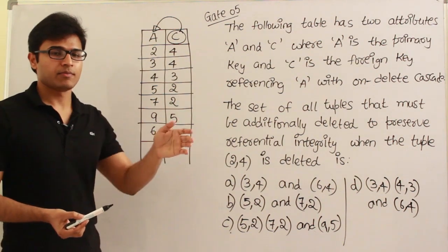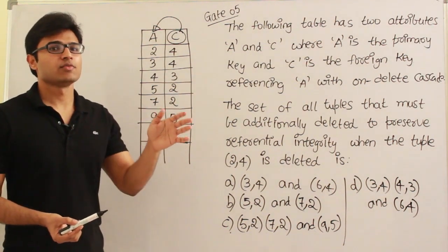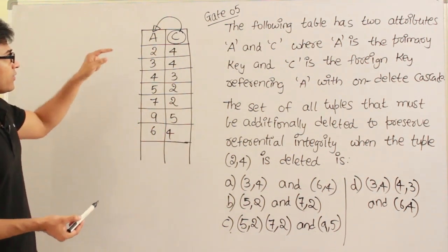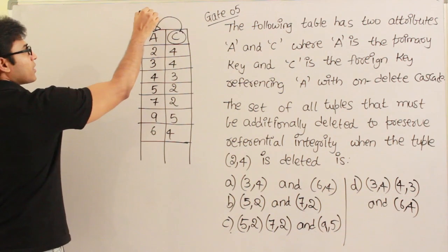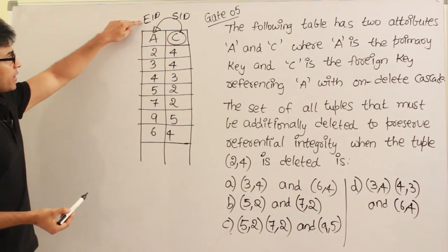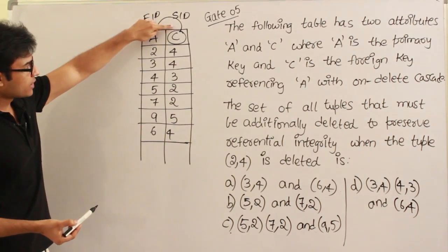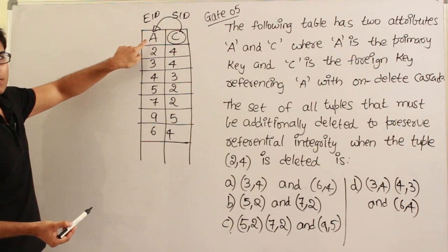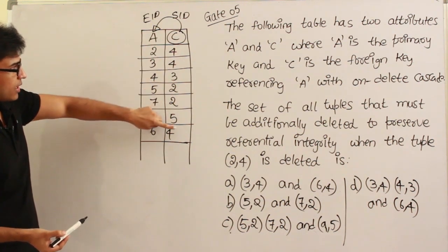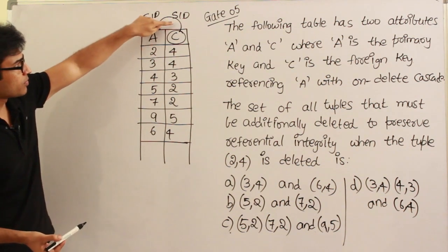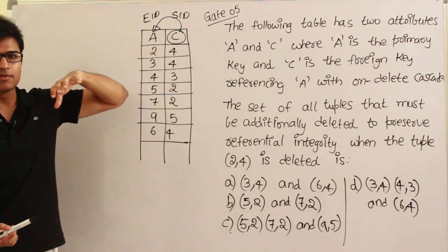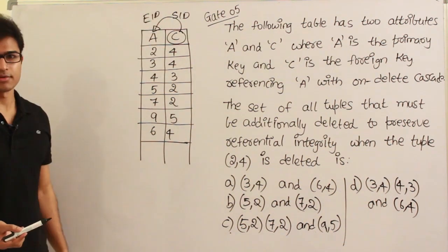For example, let's say an employee is going to have a supervisor who is also an employee. If this is the employee ID and this is the supervisor ID, then every supervisor has to be an employee. Therefore, if a value is present in the supervisor ID column, it has to be present in the employee ID column. Because a supervisor is also an employee — if there is no employee, you cannot mark him as a supervisor.